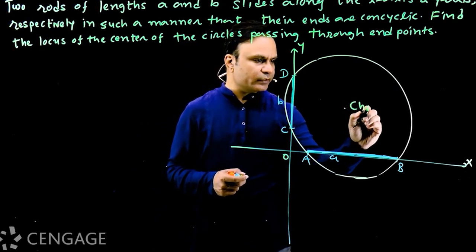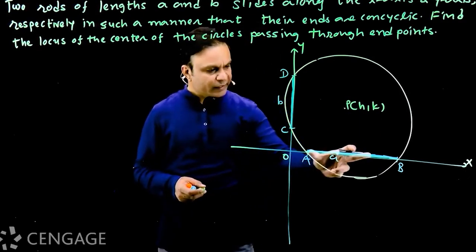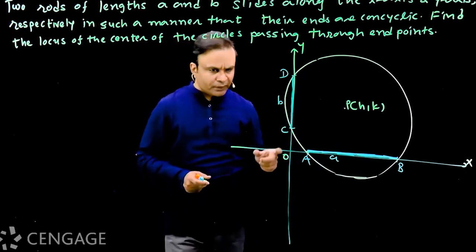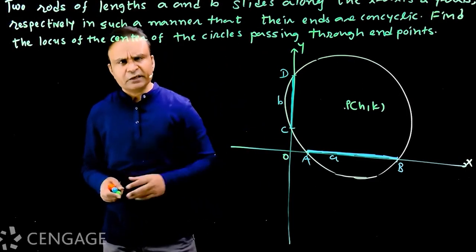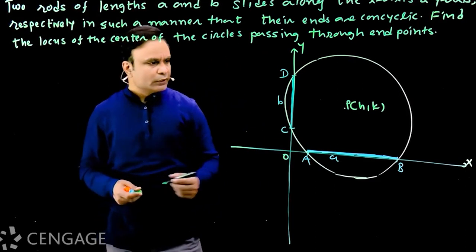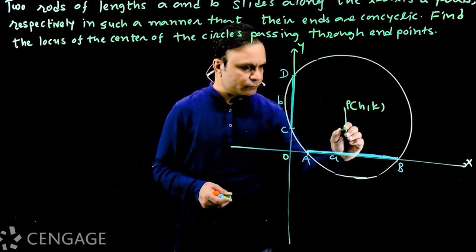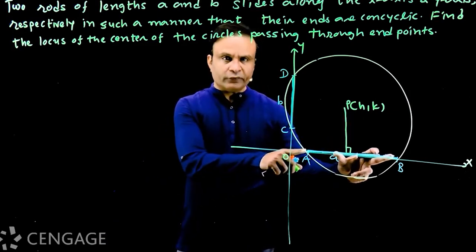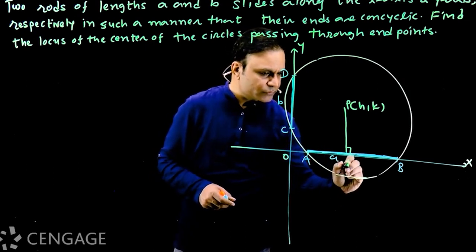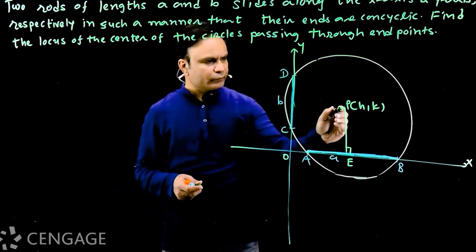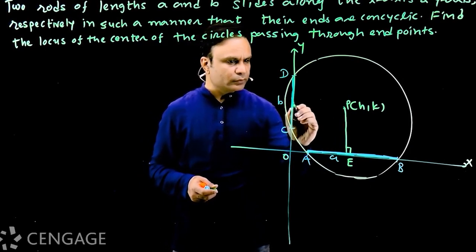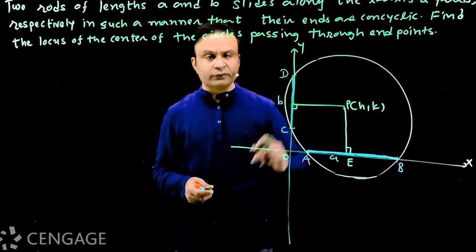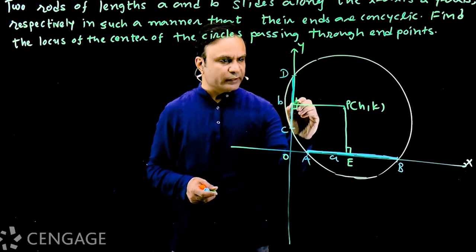Suppose this is point P(h, k). Now we have two chords of the circle and the center. Whenever we have chords of a circle, generally what we do is we drop perpendiculars from the center upon the chords. This perpendicular meets AB at point E, which is the midpoint of AB. Similarly, from the center we drop a perpendicular on chord CD, meeting it at point F, which is the midpoint of CD.